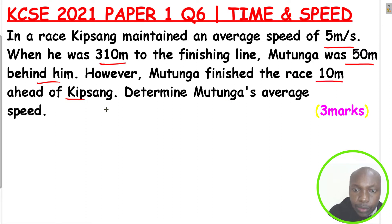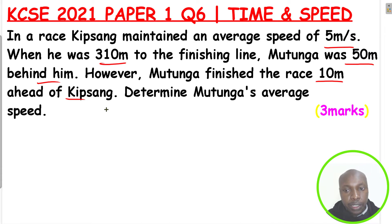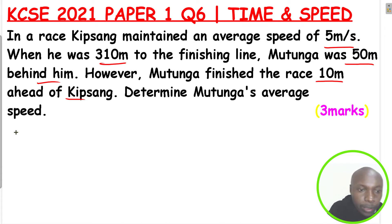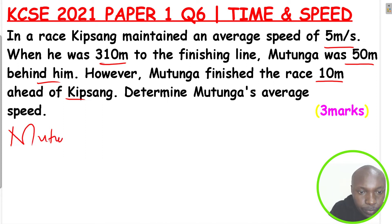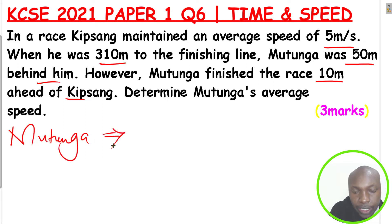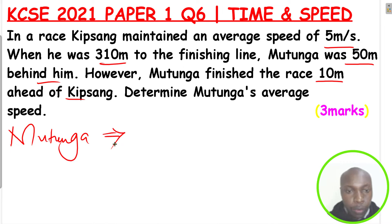There is something here we need to get — we need to get the distance that was to be moved by Mutunga. So, we need to find the distance by Mutunga.